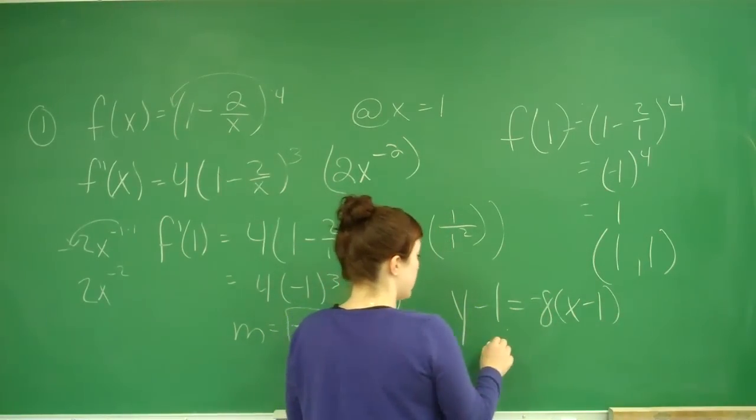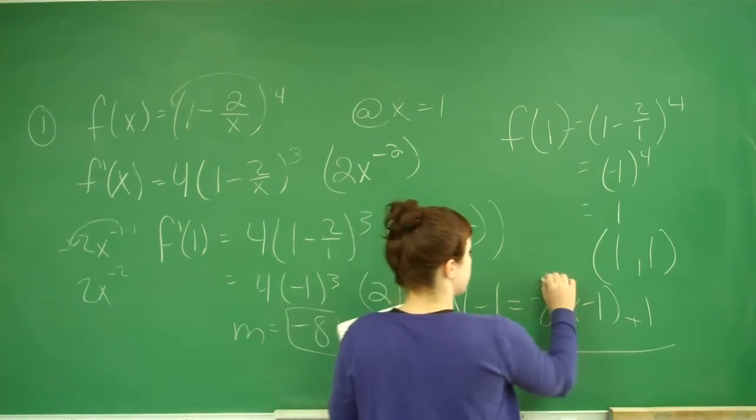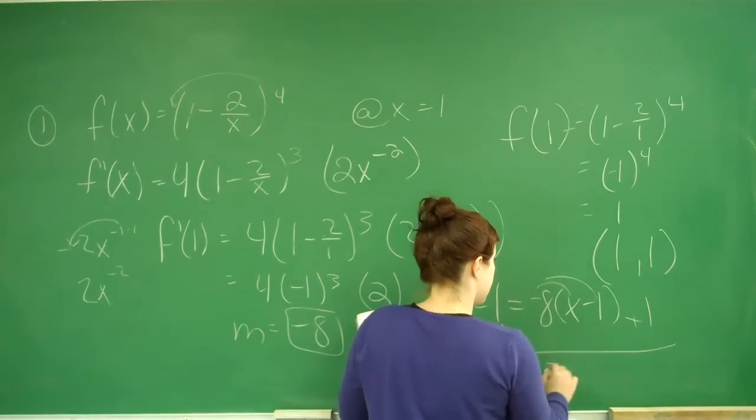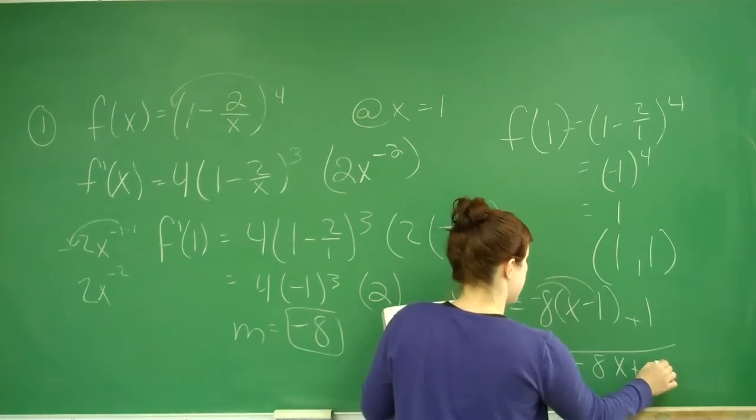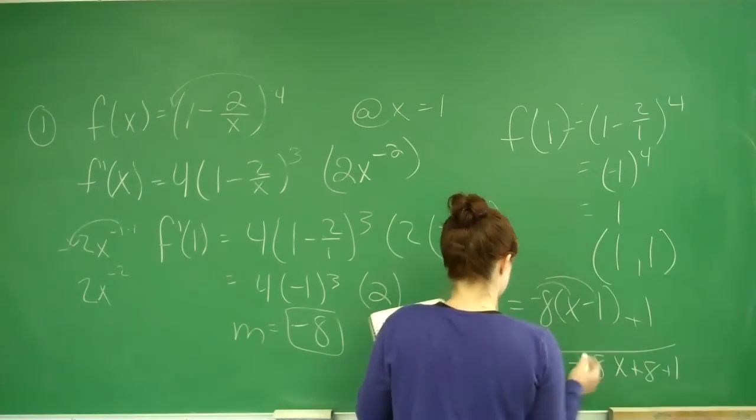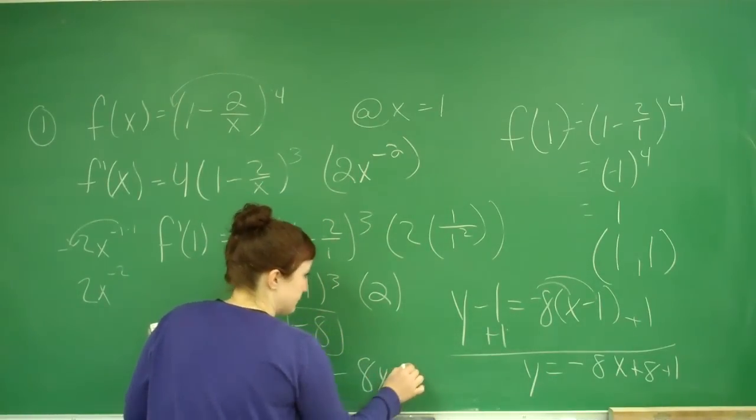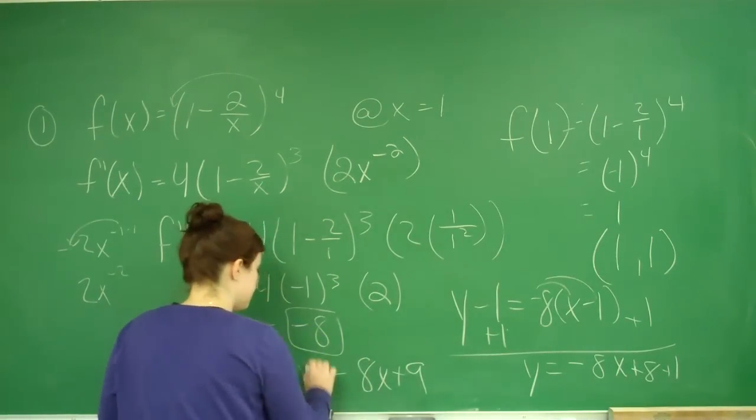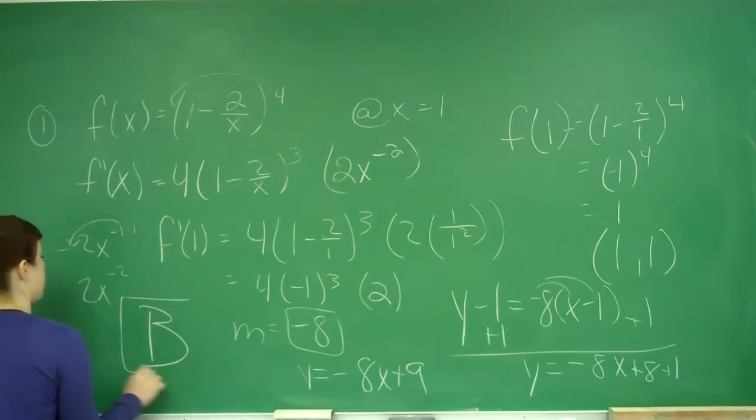Distributing and simplifying, I get y = -8x + 8 + 1. So y = -8x + 9, and that is answer E.